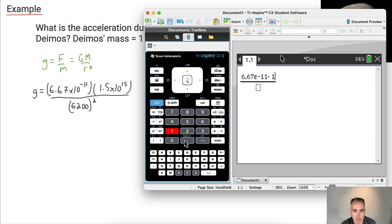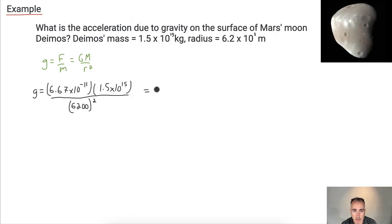Now I just got to do this on my calculator. So it's that simple. I just get out my trusty calculator and I just write this down. So 6.67 times 10 to the negative 11, all that times 1.5 times 10 to the 15. All that divided by, in brackets, 6,200 squared.